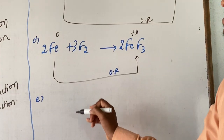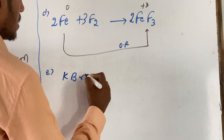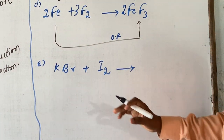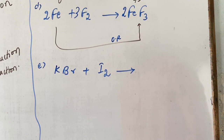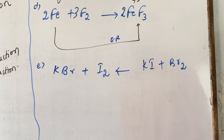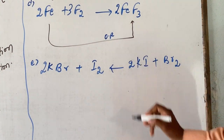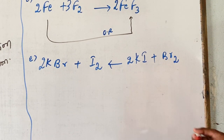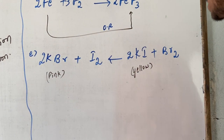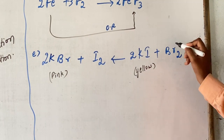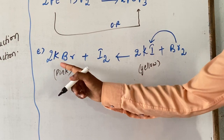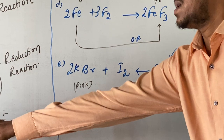One more example: 2KBr + I₂. This is a reversible reaction giving 2KI + Br₂. Bromine is more reactive than iodine; hence bromine replaces iodine and it forms potassium bromide. These are all the examples related to the oxidation reaction.